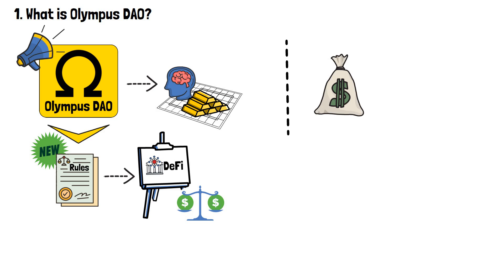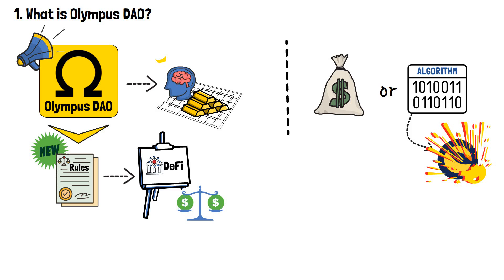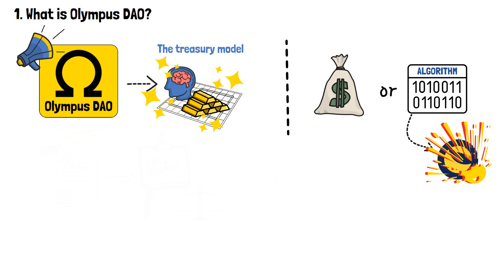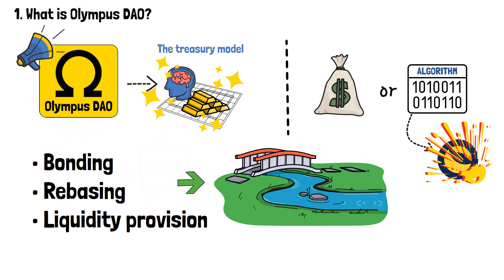The fundamental concept behind Olympus DAO lies in the reimagining of reserve assets. Instead of relying on traditional fiat-backed or algorithmic approaches, like Terra Luna did, Olympus DAO introduces a rather revolutionary mechanism called the Treasury Model. This model employs a combination of bonding, rebasing and liquidity provision to create a resilient ecosystem. So, what do these terms mean?